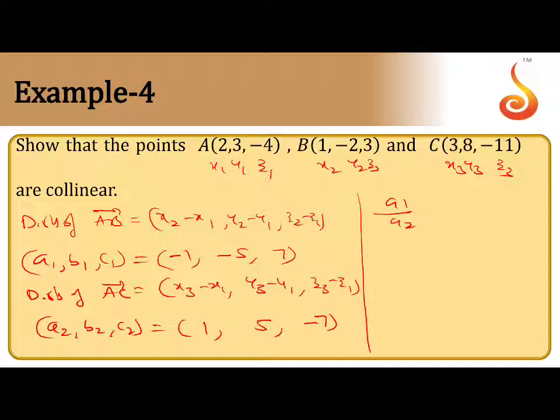A1 by A2 equals B1 by B2 equals C1 by C2. What is A1? Minus 1 by 1 equals minus 5 by 5 equals 7 by minus 7, which is equal to minus 1.